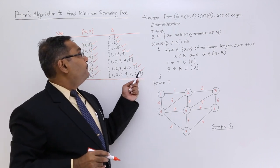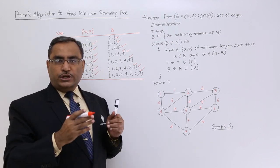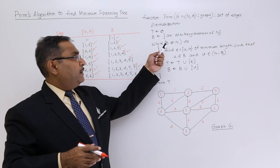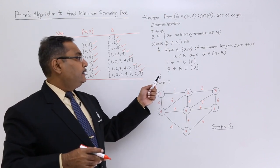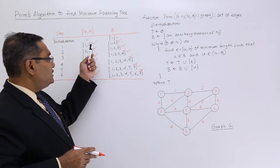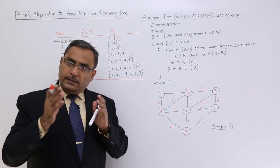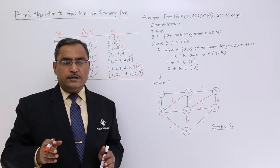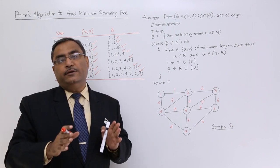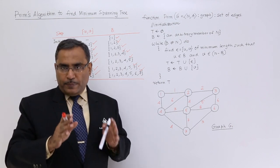Now you see, b has grown which is equal to n. This particular while loop will terminate, and return t. These are the respective edges in t, and they will be returned. That is the minimum spanning tree obtained through Prim's algorithm.